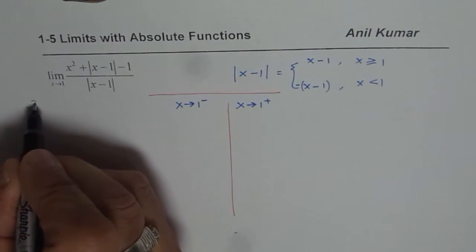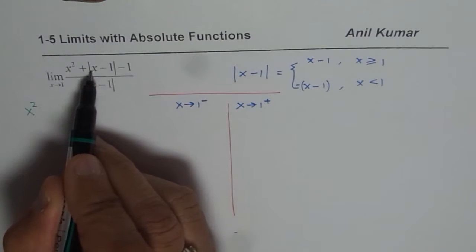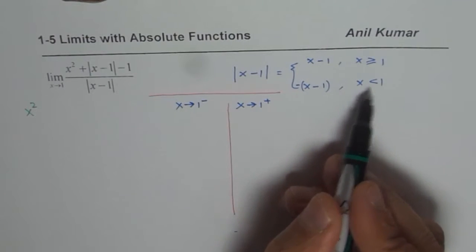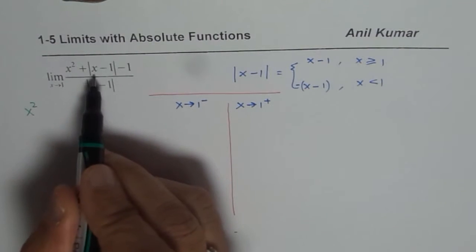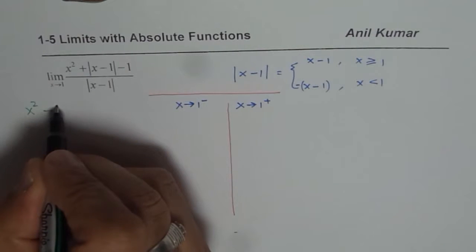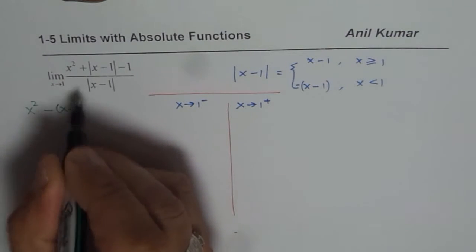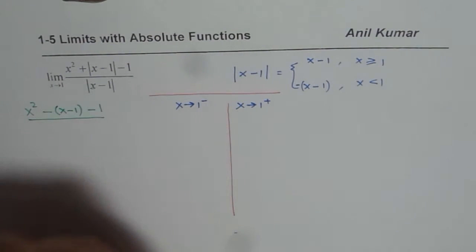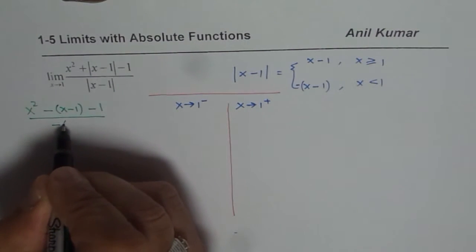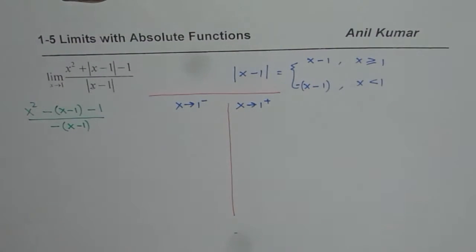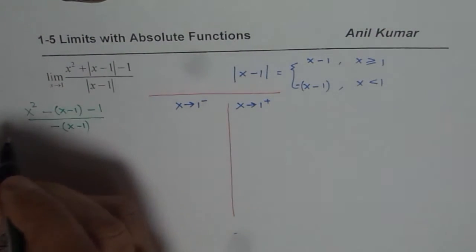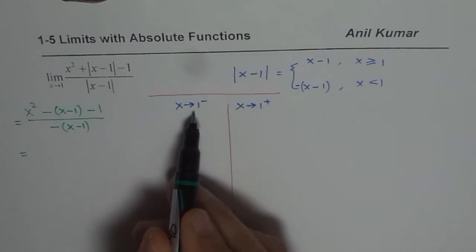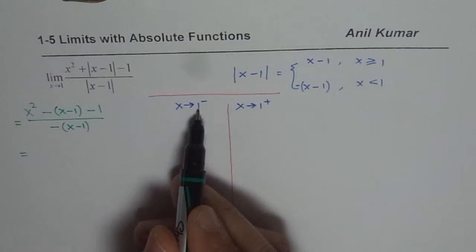So the function here is x squared plus absolute value of x minus 1. But when we are on the left side, when x is less than 1, then this absolute value should be written as minus of x minus 1. And then we have minus 1 here and then absolute value of this should be written as minus of x minus 1. So that is how the function changes. So we are only writing the function and first exercise is to simplify the function when x values less than 1.